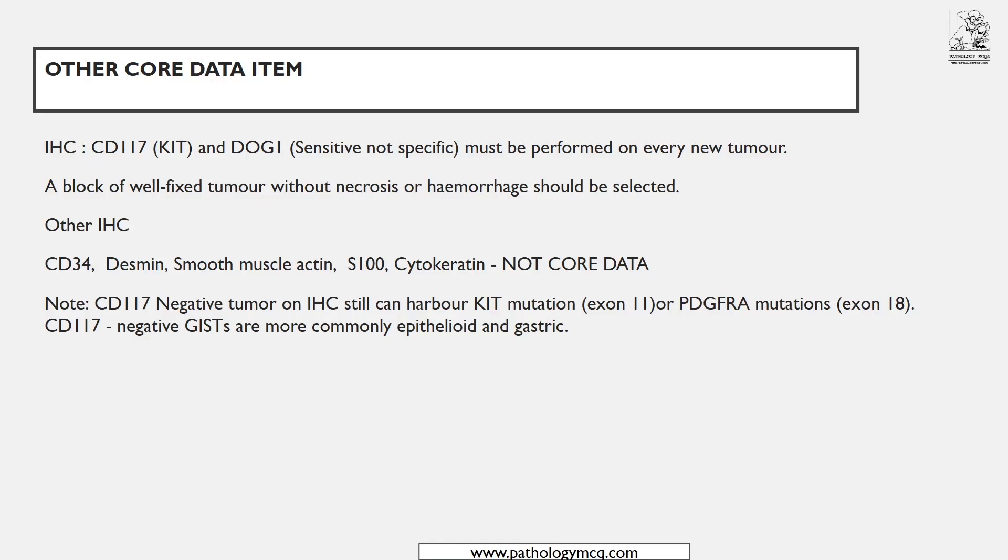When CD117 is negative on IHC, the patient can still harbor c-Kit or PDGFRA mutations. CD117-negative GISTs are generally epithelioid and gastric. In my long case, I incorporated this point: since it was an epithelioid GIST, I mentioned that CD117-negative GISTs are most commonly gastric, and in such cases I would perform c-Kit and PDGFRA mutational studies. This shows how to incorporate dataset knowledge into short and long cases.